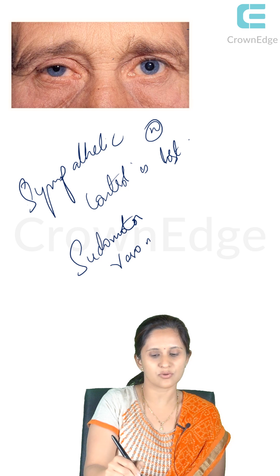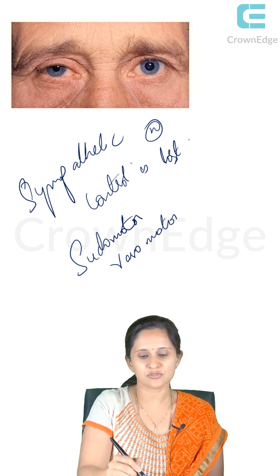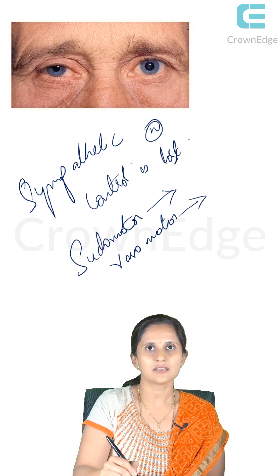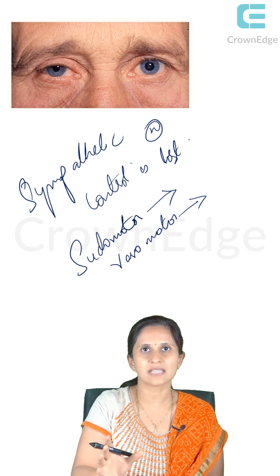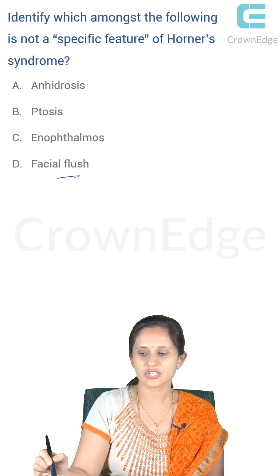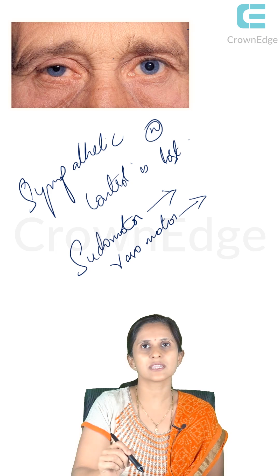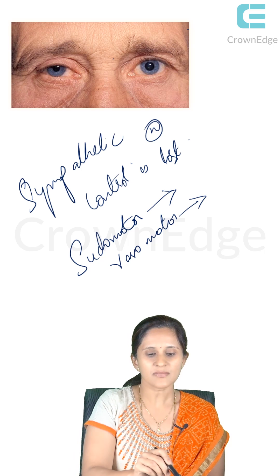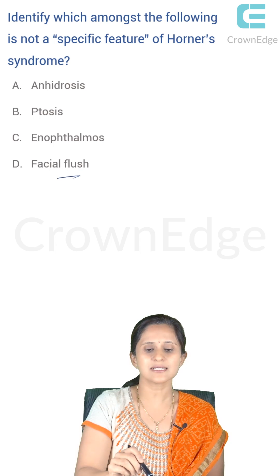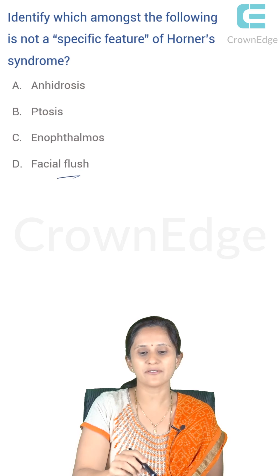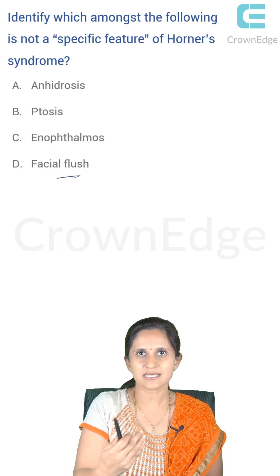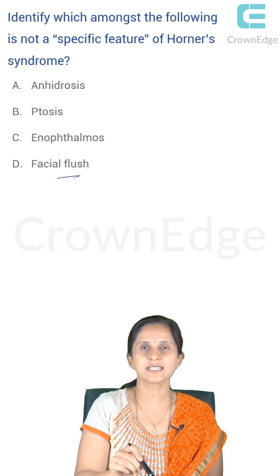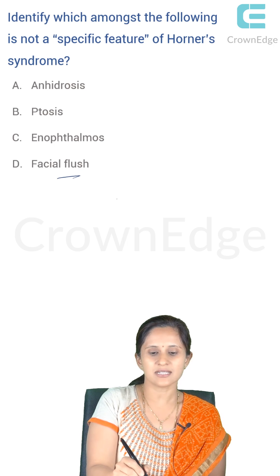When sudomotor control is lost there is no sweating; when vasomotor control is lost there is no vasoconstriction, causing facial flush. Ptosis and miosis happen when the muscles controlling eye movements are hampered. Enophthalmos is actually a pseudo appearance — when ptosis occurs, the eyeball appears pushed into the socket, which is a relative pseudo appearance. Enophthalmos is not a true feature of Horner syndrome, so the answer is C.